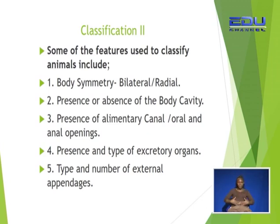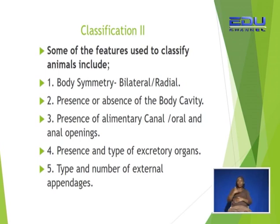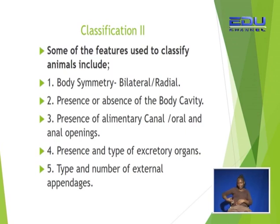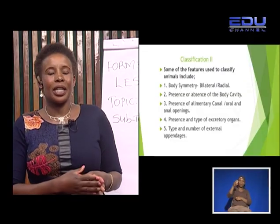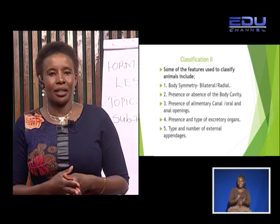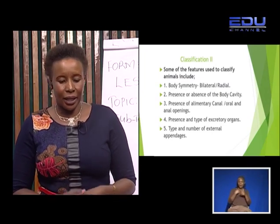Another feature is the presence or absence of a body cavity. Some organisms, such as those belonging to Phylum Arthropoda, have a coelom in their body cavity. Next is the presence of an alimentary canal — some have oral cavities while others have anal openings. Also, the presence and type of excretory organs differ; for example, we use the kidney as our excretory organ. The type and number of external appendages is another feature — some organisms have six appendages, others have two, and others have eight.